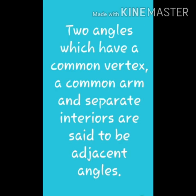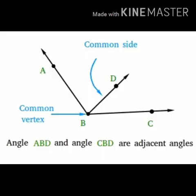We will see two examples of adjacent angles. First one: there is angle ABD and angle CBD, which are adjacent angles. Both the angles have B as a common vertex and DB as a common side.